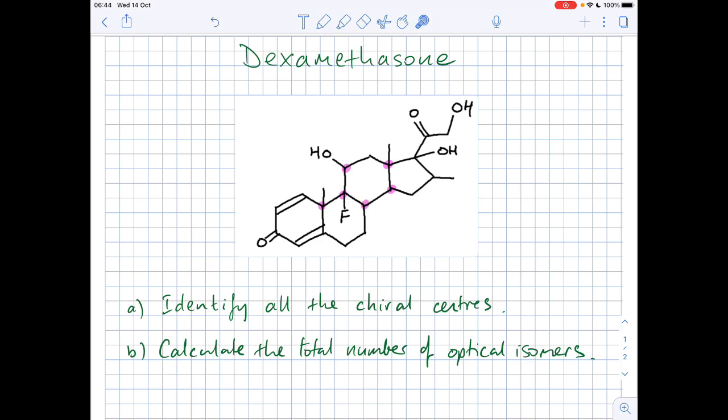And then if we move into this pentagon ring, we've got this one here. You see, obviously, there's one, two, three, four on that one. And the final one is this one here. So you've got this methyl group, you've got this CH2 down here, you've got this group here, and you've got hydrogen.